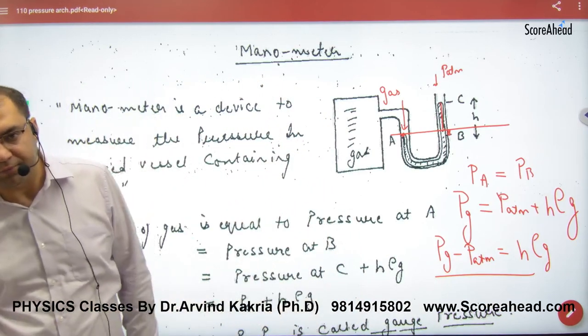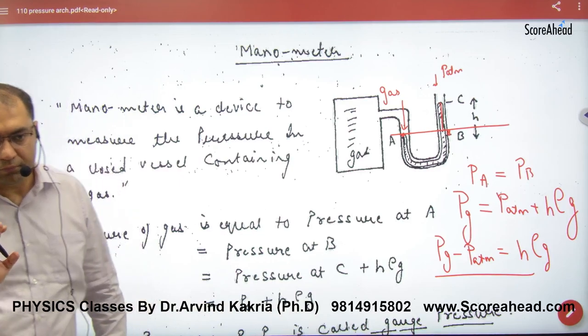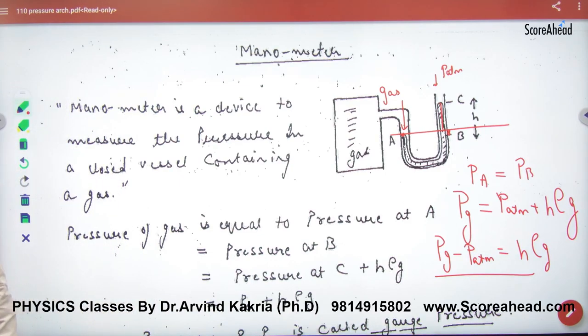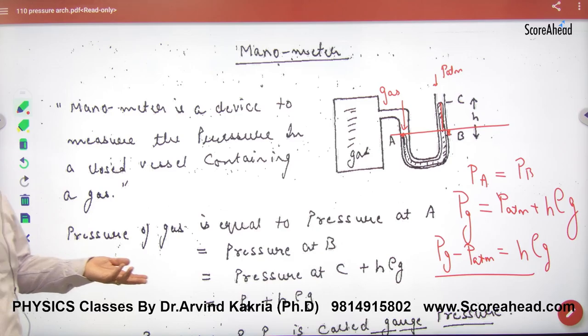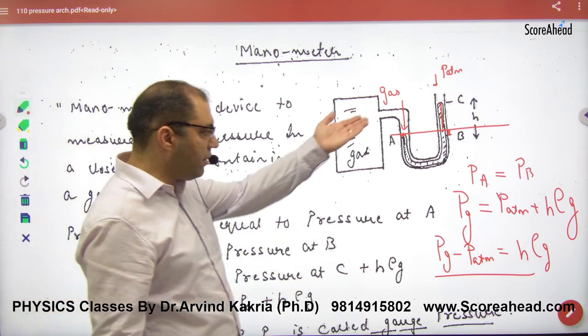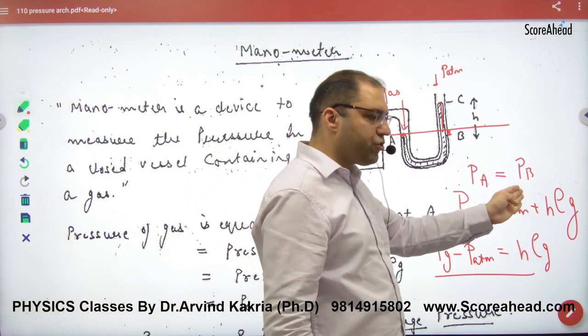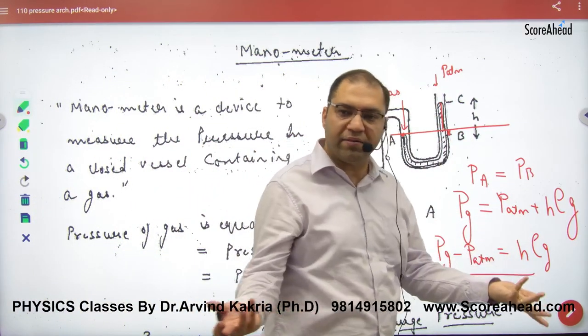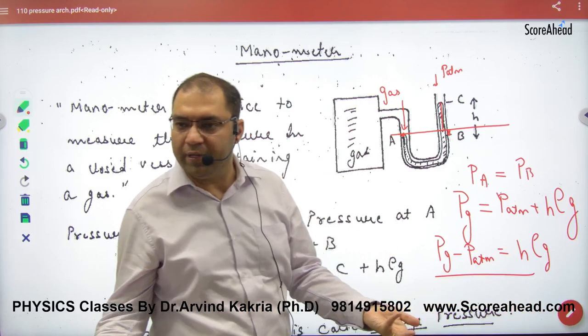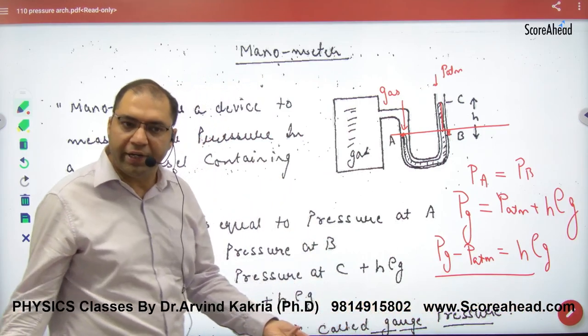So this is how a manometer works. We do not maintain a line arbitrarily — we maintain the A and B pressure points. Point A has gas pressure acting on it, and point B has atmospheric pressure acting on it. So gas pressure can easily be calculated.